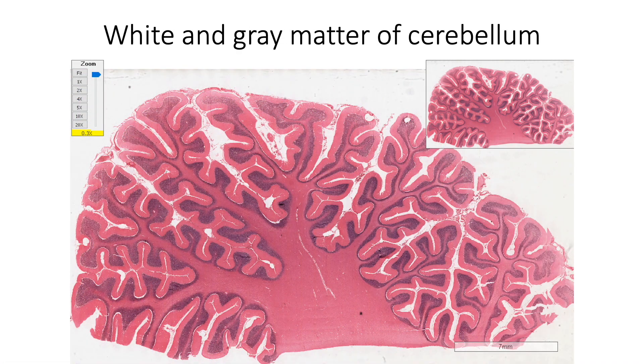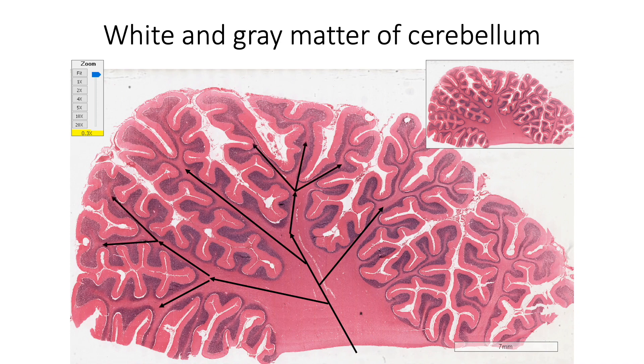Central core of white matter of the cerebellum divides like branches of a tree described as arbor vitae cerebelli. The white matter contains both ascending and descending fibers to and from the cortex. In addition, we find neuroglial cells and blood vessels. Buried in the depth of white matter, we also find four pairs of intracerebellar nuclei. However, those nuclei are not seen in this section.